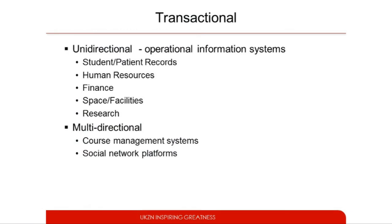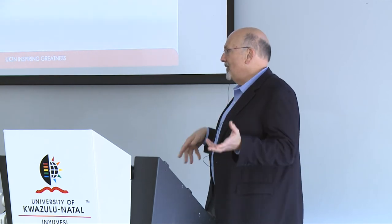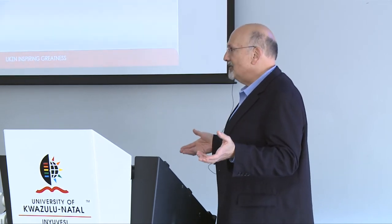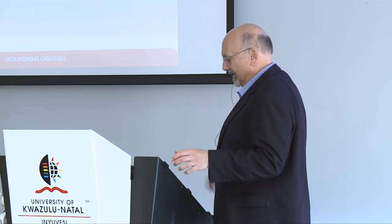These are your typical unidirectional operational information systems at a university: student information, patient records, finance, space and facilities, research, and human resources — these apply to pretty much any organization. Someone somewhere is keeping all this data. Putting these together is not simple, but a university with its analytical data act together will have that. Now we're suddenly getting into the course management system — a whole new frontier. Some of you may have used analytics on your course management system like Moodle, which may have built-in analytics showing how often students log in.